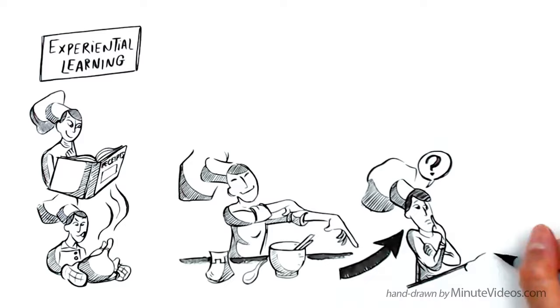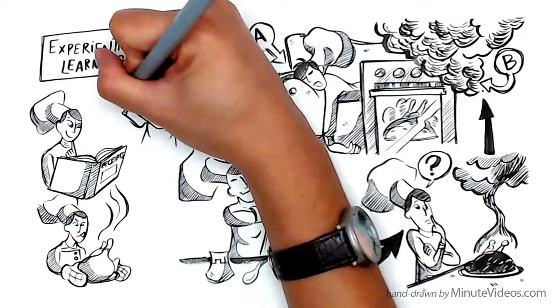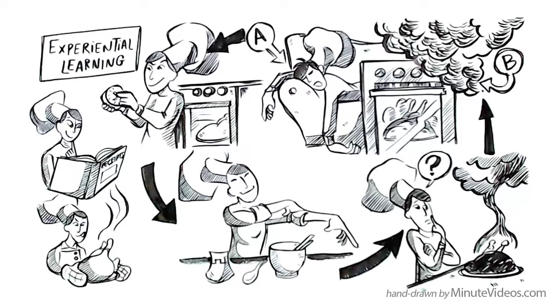First, get yourself into a situation to experience. After, reflect on what happened. Then, try to understand the relationships to form an abstract concept. If I do A, I get B. Last, decide what to do differently next time. Then do it again.